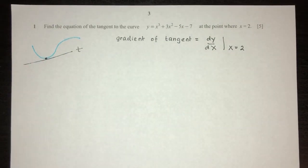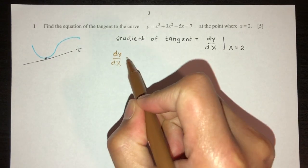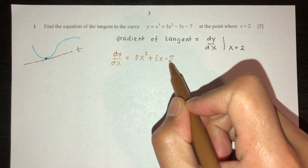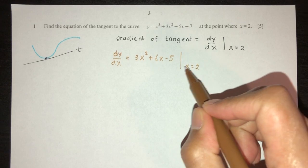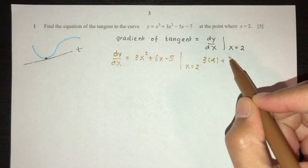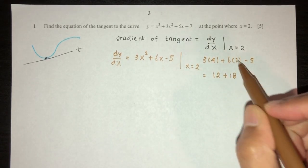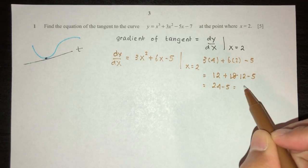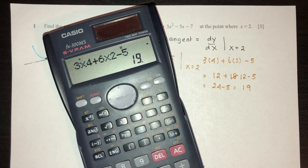Let's find the value of dy/dx at that point. y has been given to us already, so dy/dx will be 3x² + 6x − 5. At x equal to 2, replace x with 2: 3 times 4 plus 6 times 2 minus 5, that is 12 + 12 − 5, which gives 19. Always best to double check: 3 times 4 plus 6 times 2 minus 5 — that is 19.